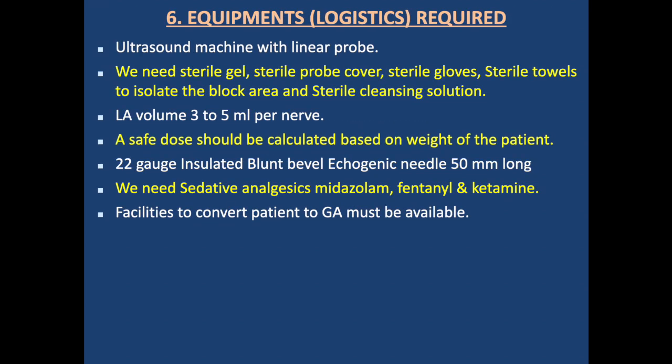Equipment and logistics required: an ultrasound machine with a linear probe, sterile gel, sterile probe cover, sterile gloves, sterile towel to isolate the block area, and sterile cleansing solution. Local anesthetic volume is 3–5 ml per nerve, with safe total dose calculated by patient weight. A 22-gauge insulated blunt-bevel echogenic needle 50 mm long is used. Sedatives — midazolam, fentanyl, and ketamine — should be available, as well as facilities to convert to general anesthesia if required.